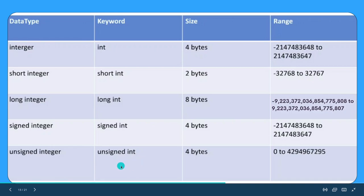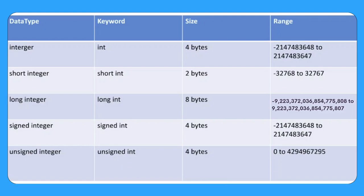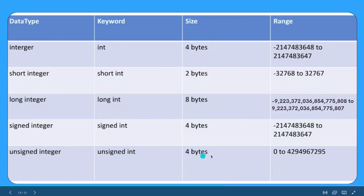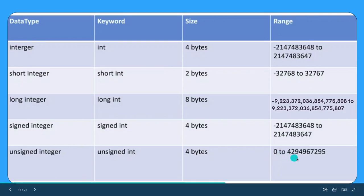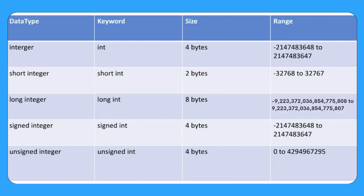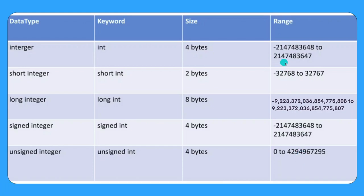If we pair unsigned with integer, we write unsigned int. The size remains 4 bytes, but the range changes. With regular int the range includes negative values, but with unsigned int the range starts from 0 to some positive number. So the data type only stores positive values. You can also store a bigger positive value — the upper bound extends further — though the total count of different values you can store remains the same.